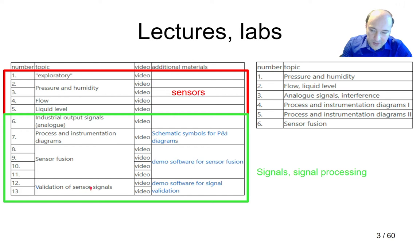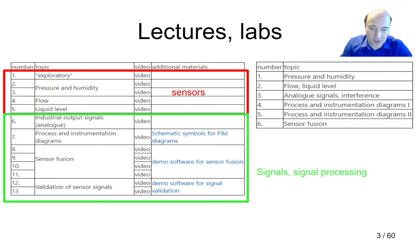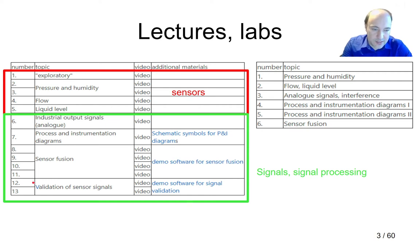Then in week seven we'll talk about process and instrumentation diagrams — a way to plot the schematic of your industrial process and include the instrumentation, using standard symbols so other people can easily understand how your process works and where your instrumentation is. At the end of the semester, from week eight until the end, we'll focus on signals and signal processing methods. We'll cover sensor fusion — how to process your signal from a sensor and fuse it with signals from other sensors, for example fusing several temperature sensors or combining accelerometer and gyroscope data to get better information than from an individual sensor.